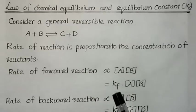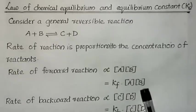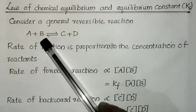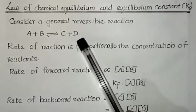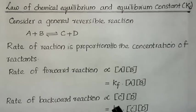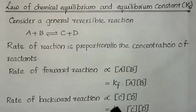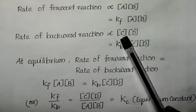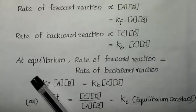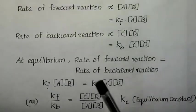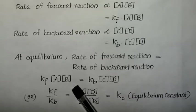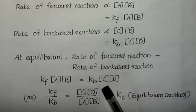Kf stands for the forward reaction constant. Similarly, the rate of backward reaction — where C plus D gives A plus B — is proportional to concentration of C times concentration of D, written as Kb × [C][D]. At equilibrium, the rate of forward reaction equals the rate of backward reaction. Therefore, equating the two: Kf × [A][B] = Kb × [C][D].